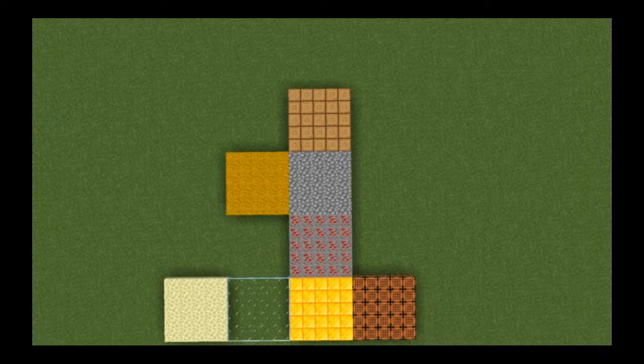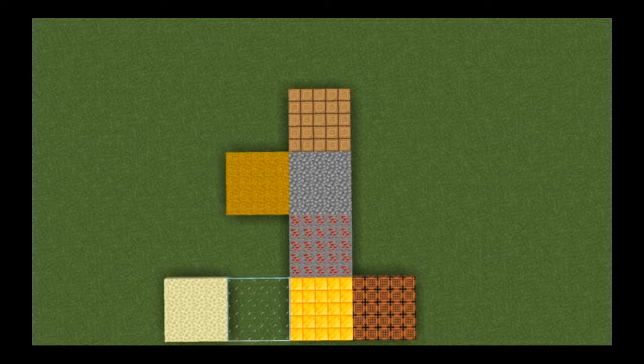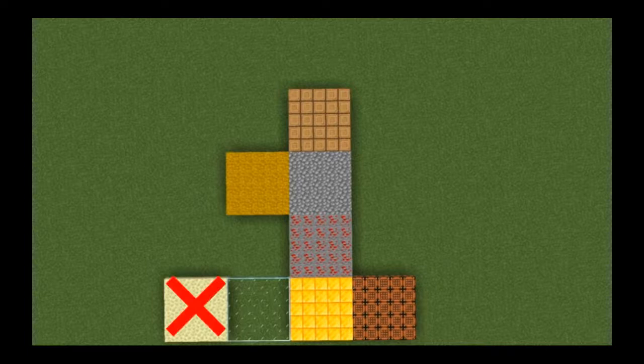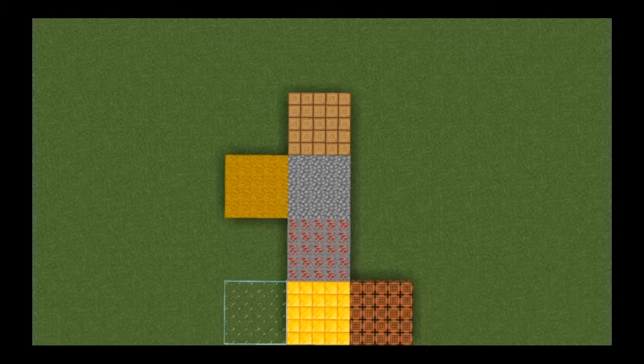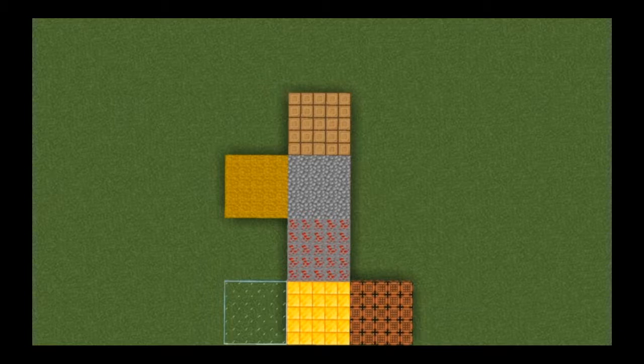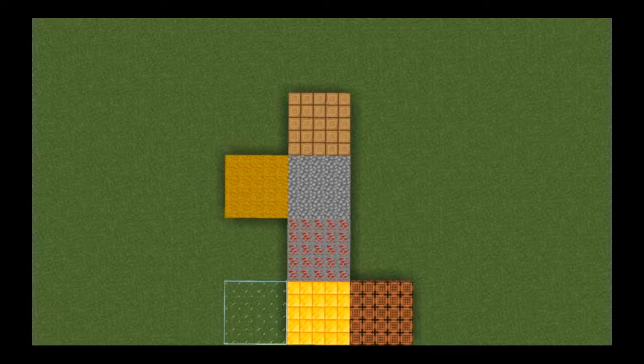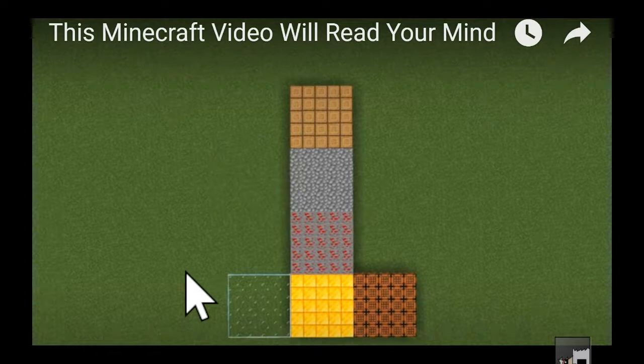So again, removing the hat. So again, it doesn't have to be there, only connected to one block. Same thing, connected to only one thing, doesn't have to be there.